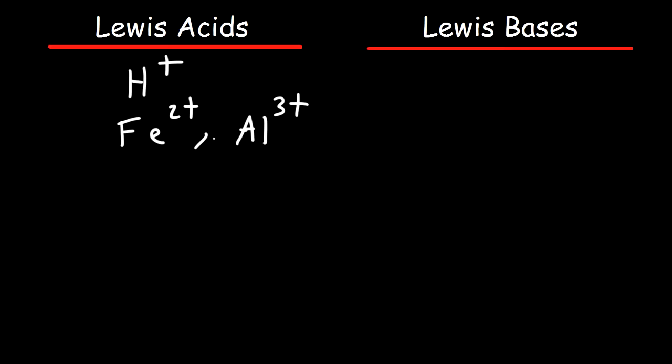Lewis bases are electron pair donors and any type of ion with a negative charge like chloride, bromide, these are Lewis bases. They have plenty of lone pair electrons to donate. Some other examples include hydroxide, iodide, water is a Lewis base.